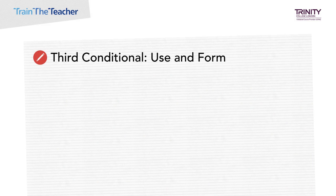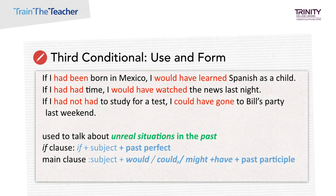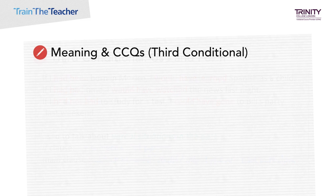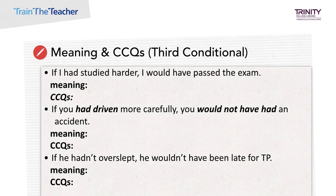The third conditional is used to refer to a time that is in the past to talk about unreal situations in the past. The facts they are based on are the opposite of what is expressed. For example, the sentence 'If I had been born in Mexico' means that in reality I had not been born in Mexico. The third conditional refers to an unreal past condition and its probable past result. In third conditional sentences, the if clause uses the past perfect simple and the main clause uses 'would' plus 'have' plus the past participle.